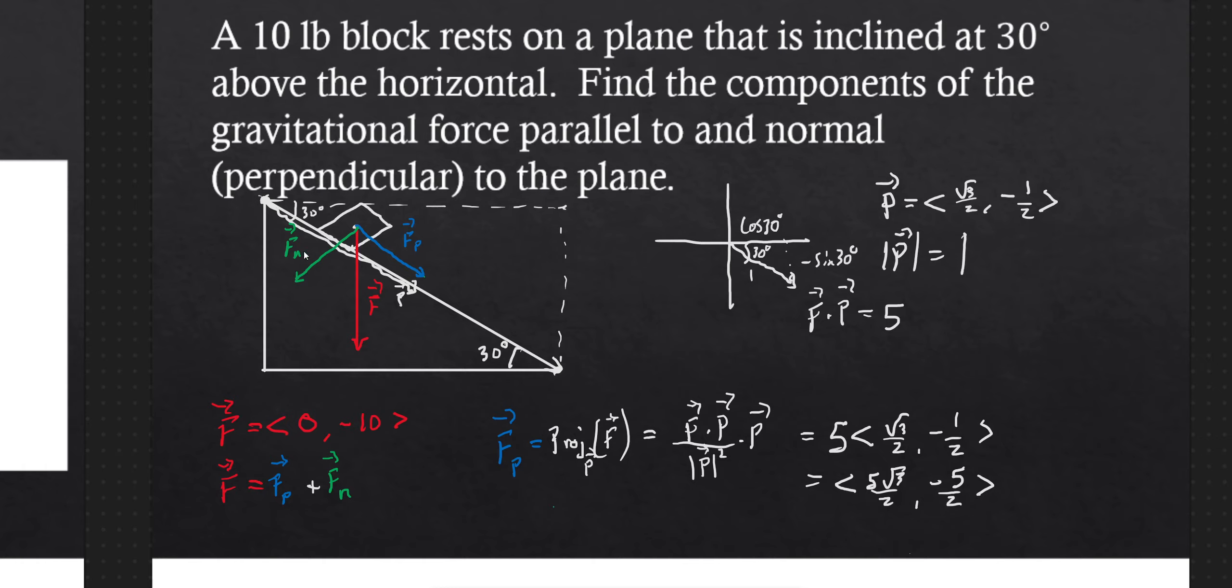Now, how do we get a hold of the normal vector? Well, here's where the algebra of vectors comes into play. I know what F is. I know the components for F. And now I know the components for P. And I know that F is Fp plus Fn. And so what that means, then, is that F minus Fp is equal to Fn.